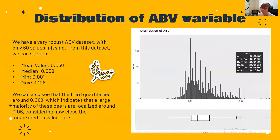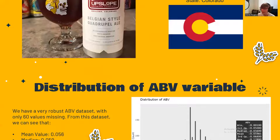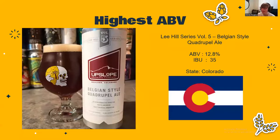If we're just looking at the distribution of the ABV variable, we'll see that it has a pretty heavy right skew. The median is 5.6% ABV and the mean is about 6%. The highest ABV beer is the Lee Hill Series Volume 5 Belgian Style Quadruple Ale with a whopping 12.8% ABV from the state of Colorado.